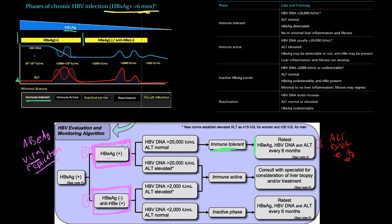The second scenario for E antigen positive patients — and this is a dangerous one — is when your body does try to fight the virus. DNA levels go down as the body fights it, but this leads to active inflammation in the liver, so ALT levels go up. There's more risk of fibrosis, cirrhosis development, and potential risk for hepatocellular carcinoma. When immune active, we have to consider treatment options: sending them to a hepatologist, considering liver biopsy, and potentially treating with different medications.